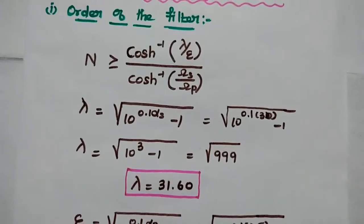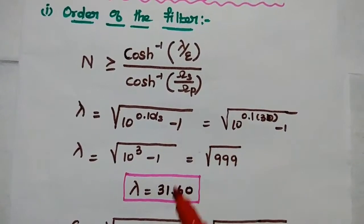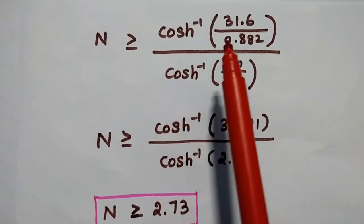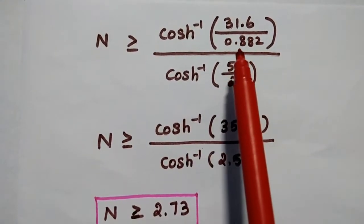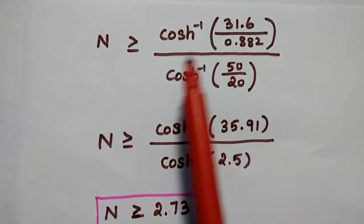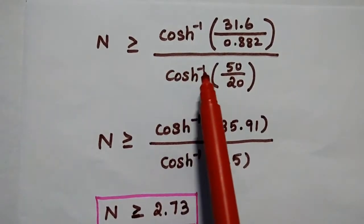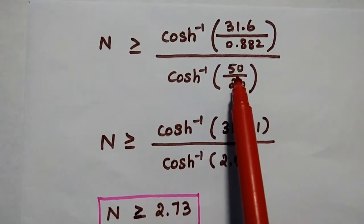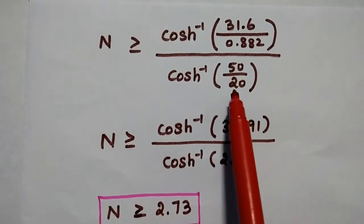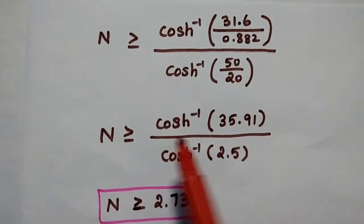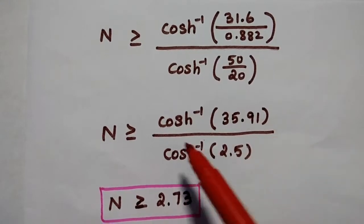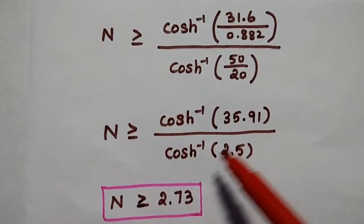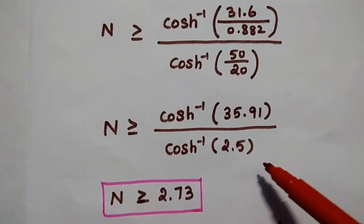After finding lambda and epsilon, we substitute those values into the order formula. N ≥ cosh⁻¹(31.6 / 0.882) divided by cosh⁻¹(50 / 20). This simplifies to cosh⁻¹(35.91) divided by cosh⁻¹(2.5).